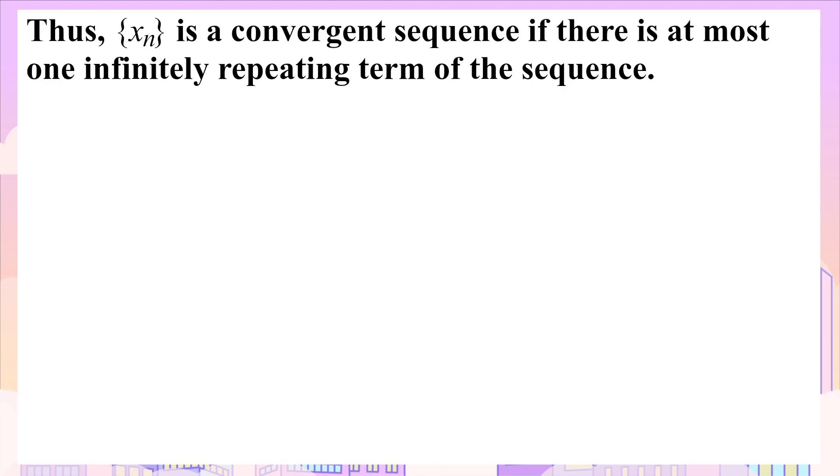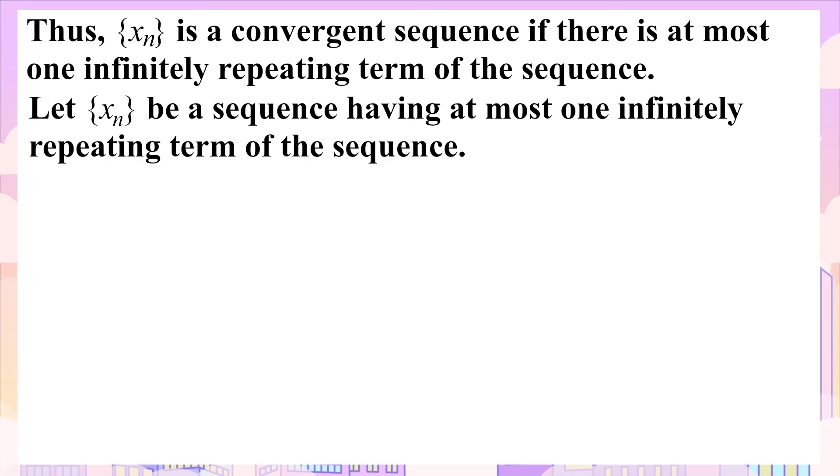Thus {xₙ} is a convergent sequence if there is at most one infinitely repeating term of the sequence. Now we have to find out the points of X to which the sequence {xₙ} converges.